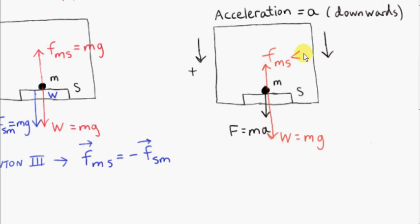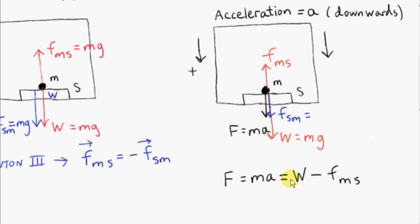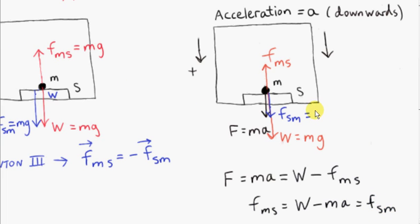So the contact force F_MS is going to be less than mg, less than W. By Newton's third law, F_SM — the force on the scales due to the mass — is equal in magnitude to F_MS, and that is the reading on the scales. From the resultant force equation, we bring W over and change signs: F_MS = W minus MA. And since F_SM equals F_MS in magnitude, the reading on the scales is W minus MA — a smaller reading than when the elevator is not accelerating.